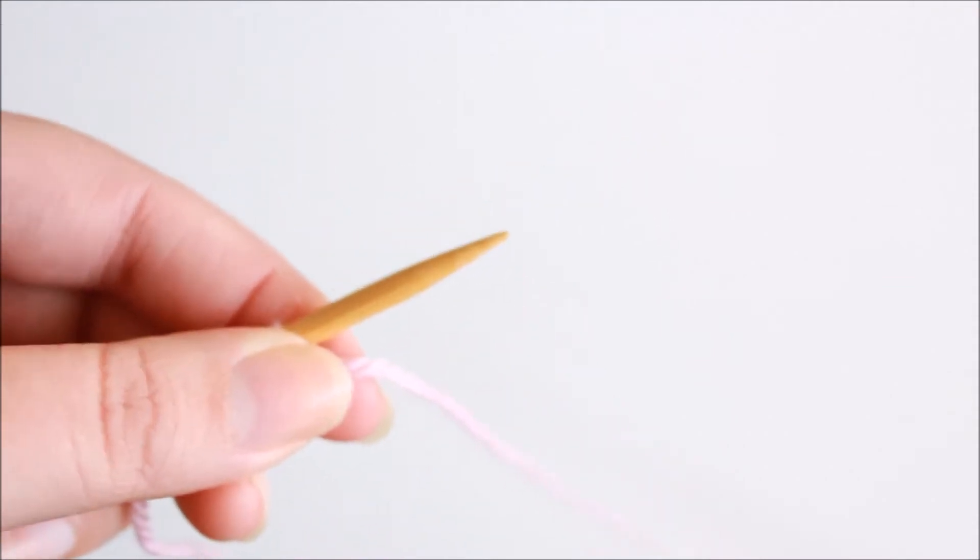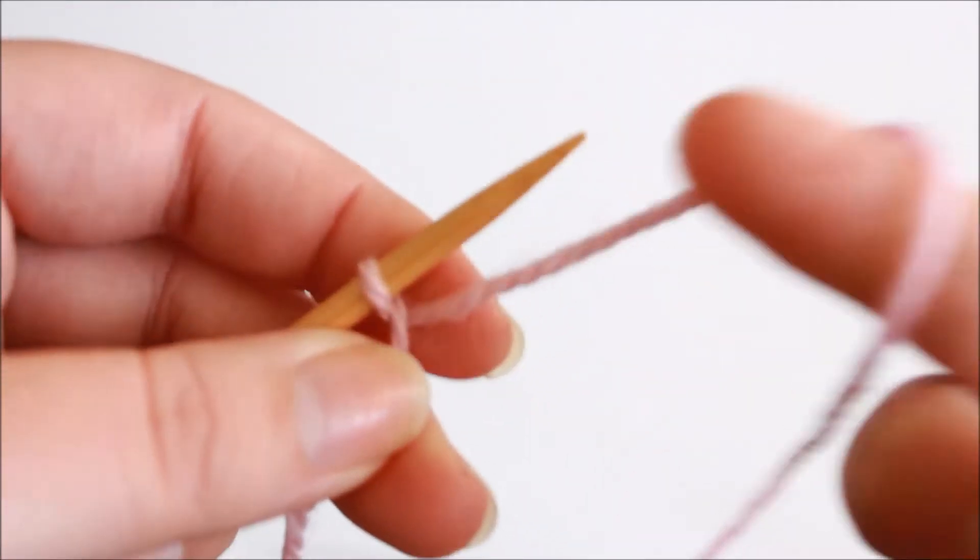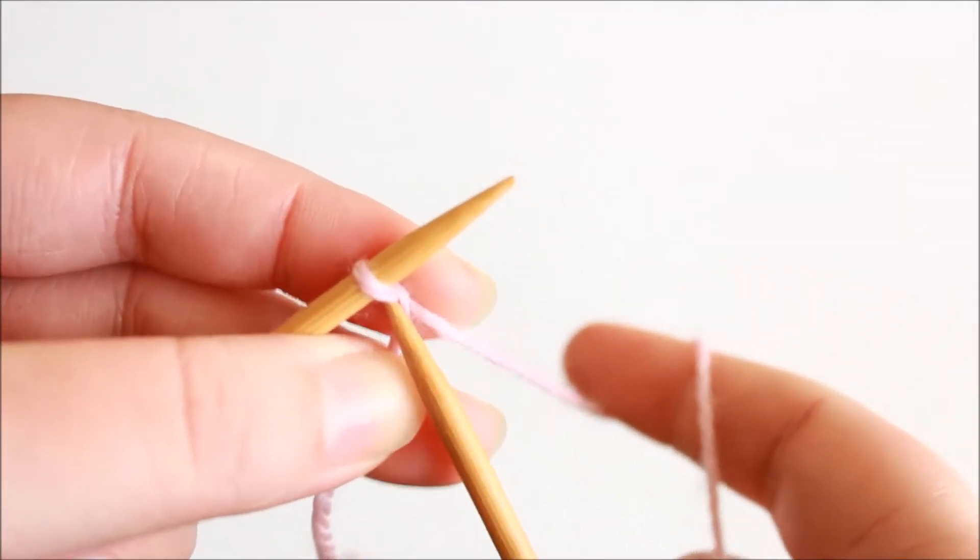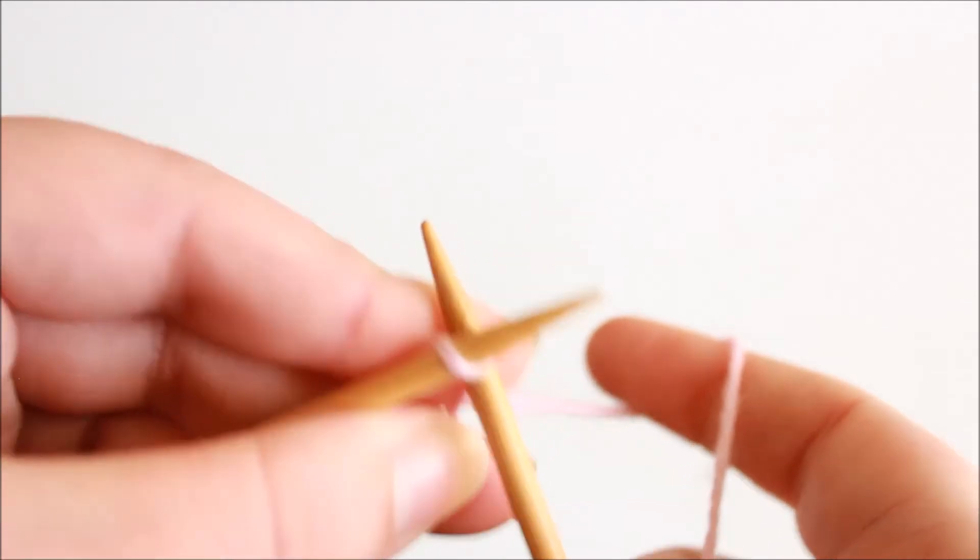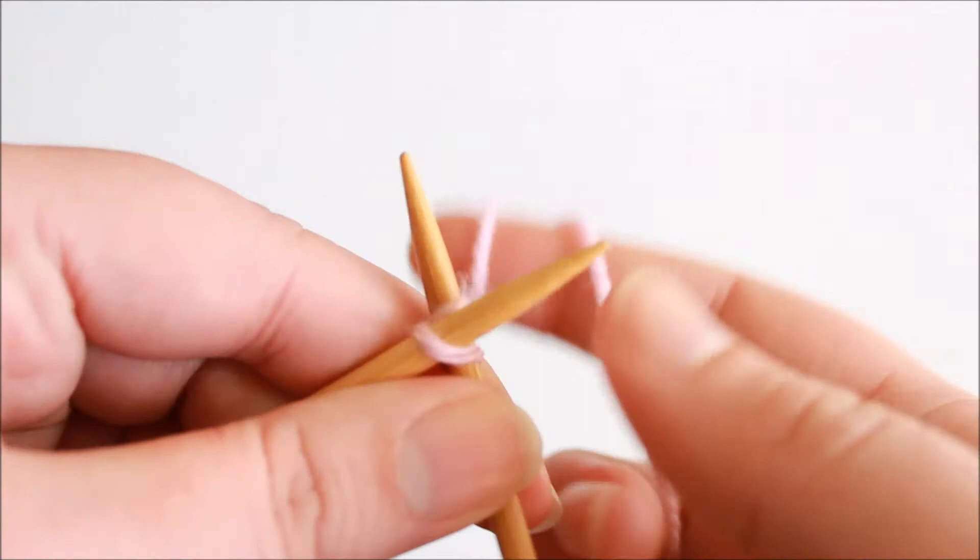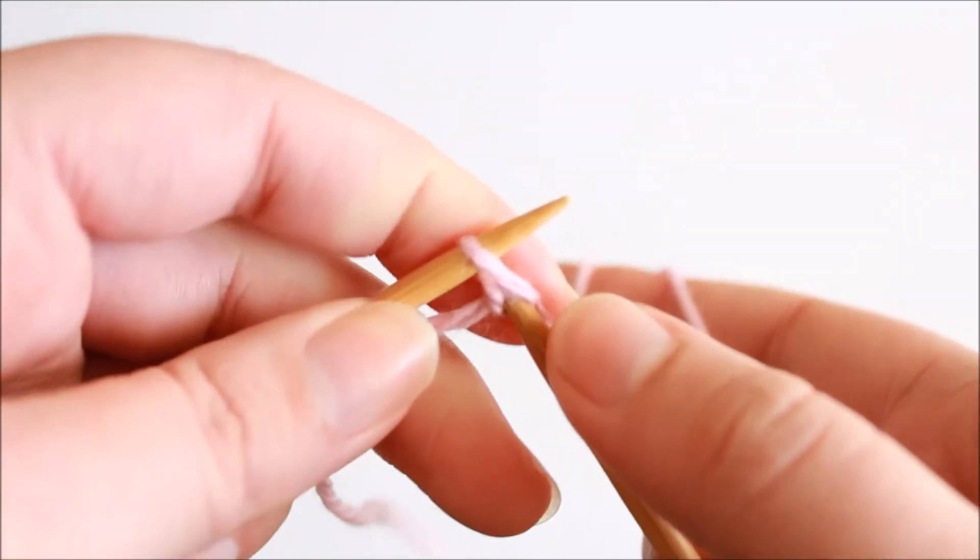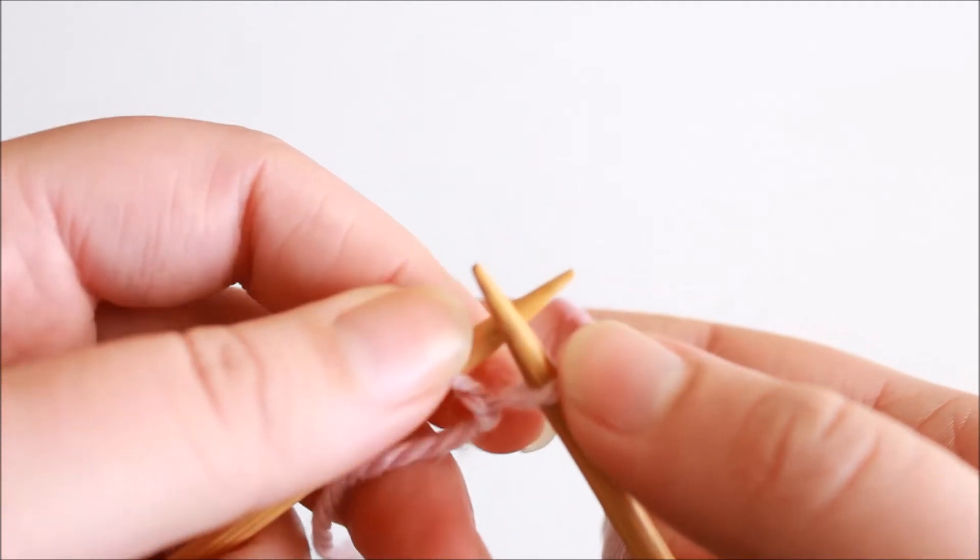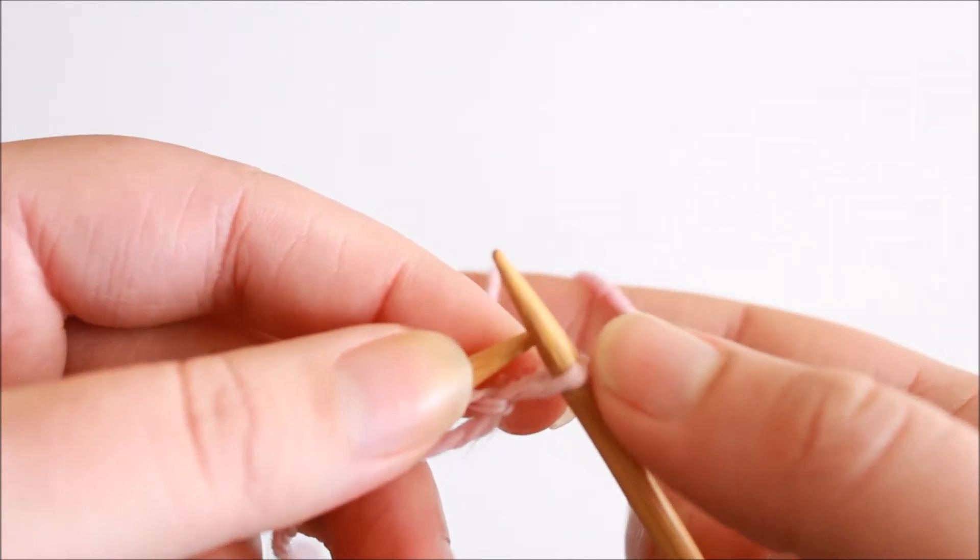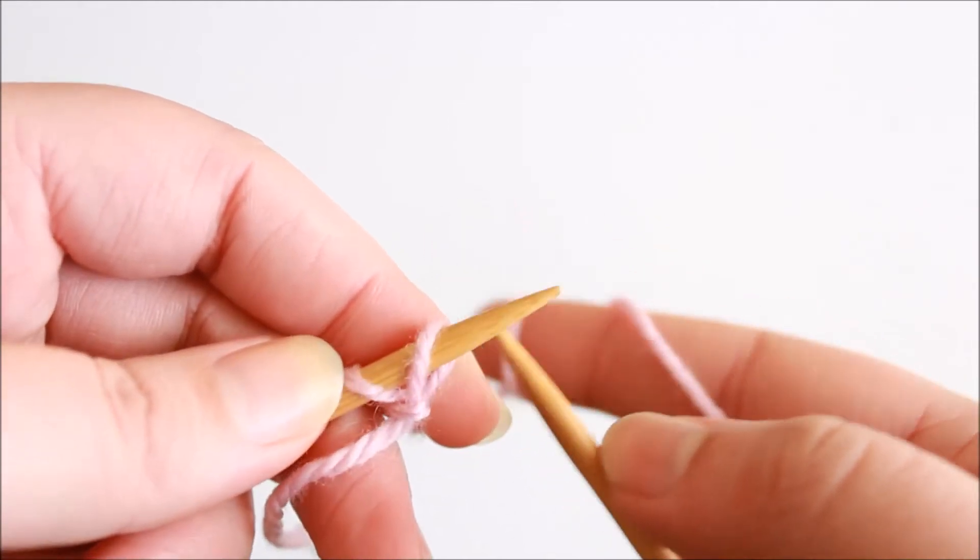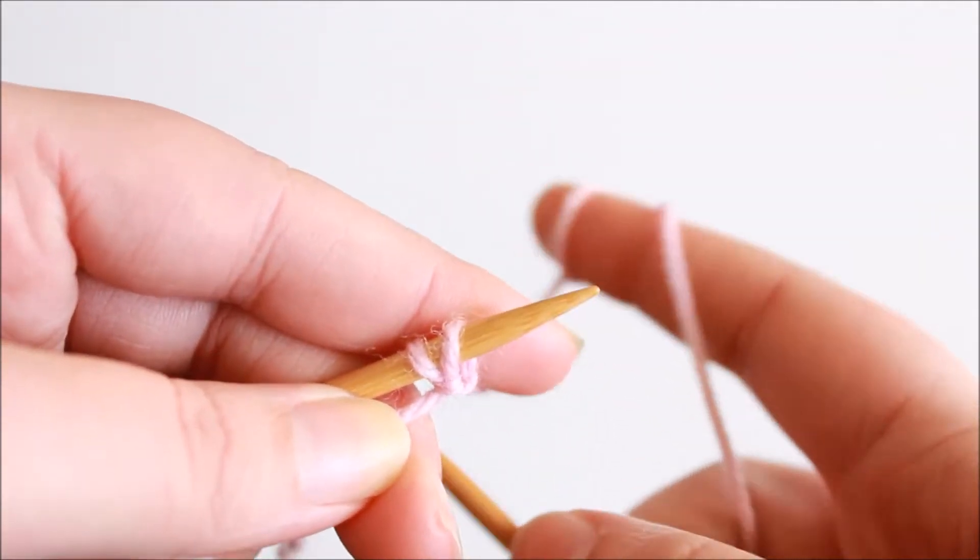So to start off this technique we're going to knit into this first stitch. So we take our right hand needle and we insert it knitwise into the front loop of that stitch wrap our working yarn around as if to knit and draw the loop through but instead of slipping the stitch from the left hand needle as if it was worked we're going to take the loop on our right hand needle and transfer it to the left hand needle thereby creating a stitch.